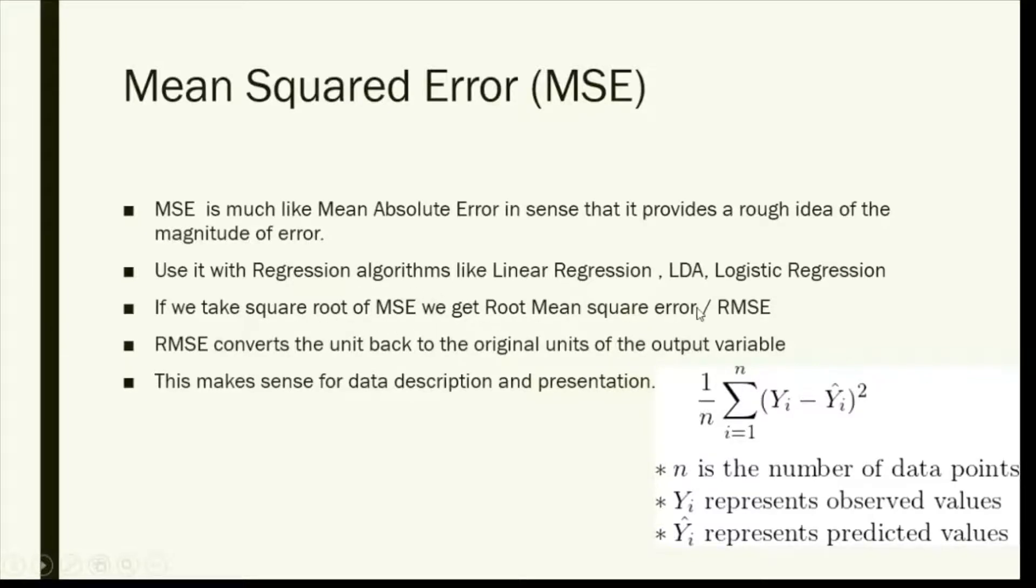If we take the square root of Mean Squared Error, we get Root Mean Squared Error, or RMSE. This is the formula for this. What you take is the predicted values and the observed values. Here I have used y-hat, which represents predicted values, and yi, which is the observed.